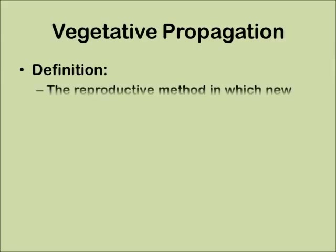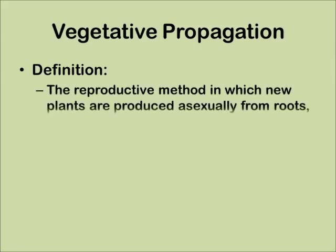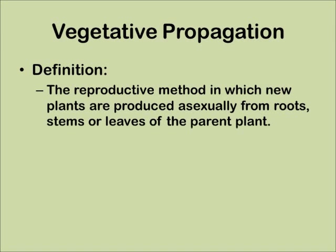Vegetative propagation is the reproductive method in which new plants are produced essentially from roots, stems, or leaves of the parent plant.